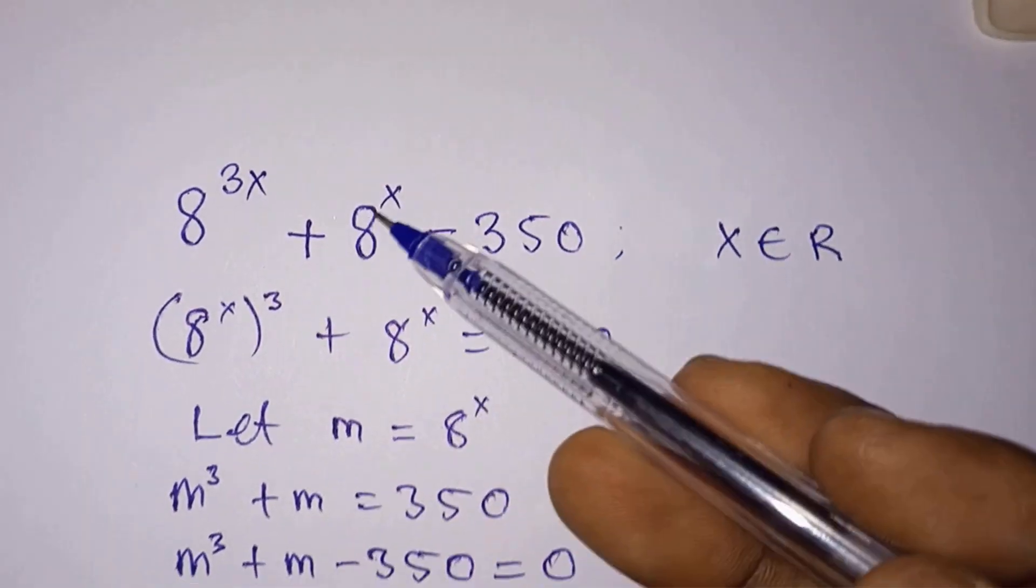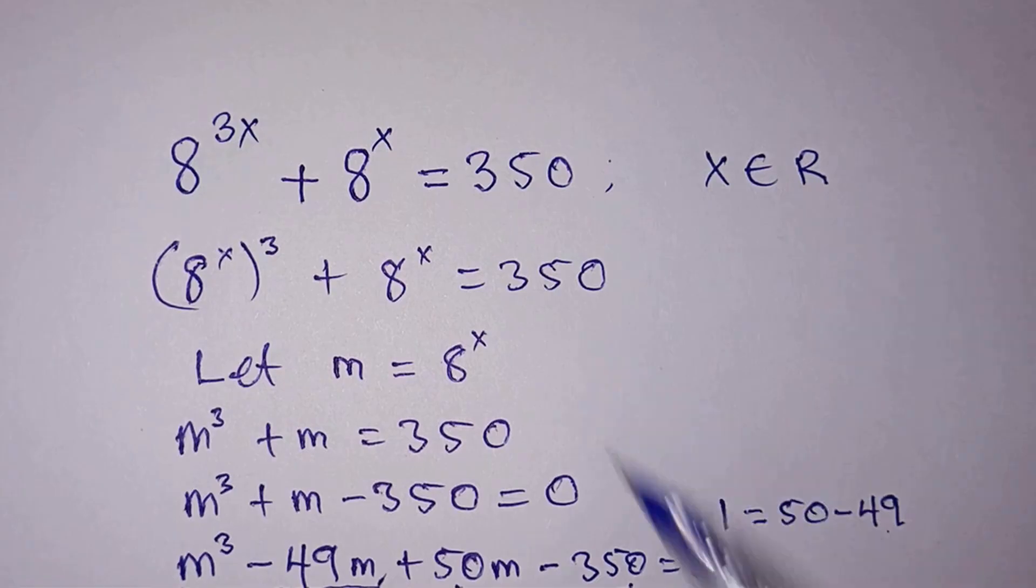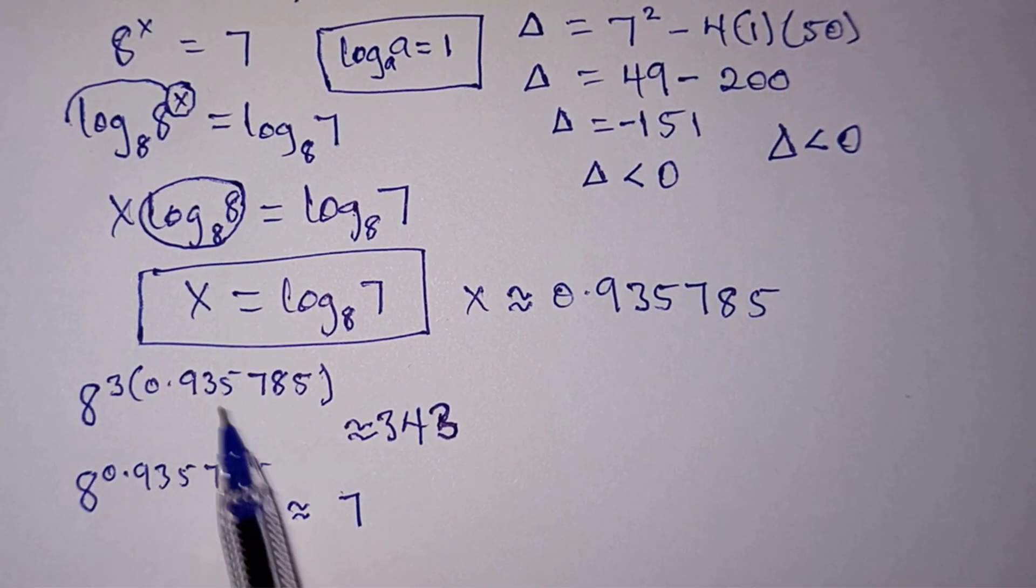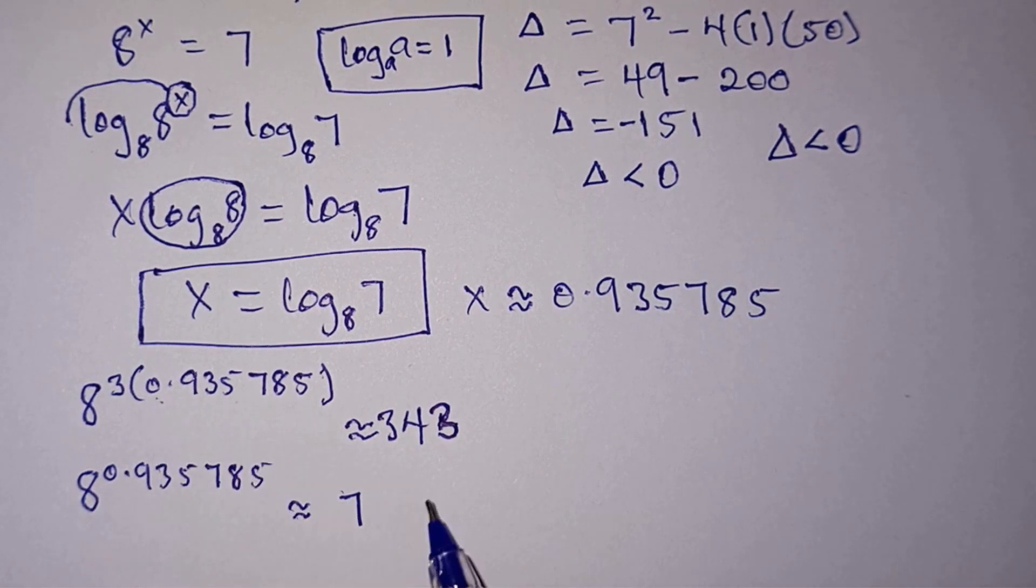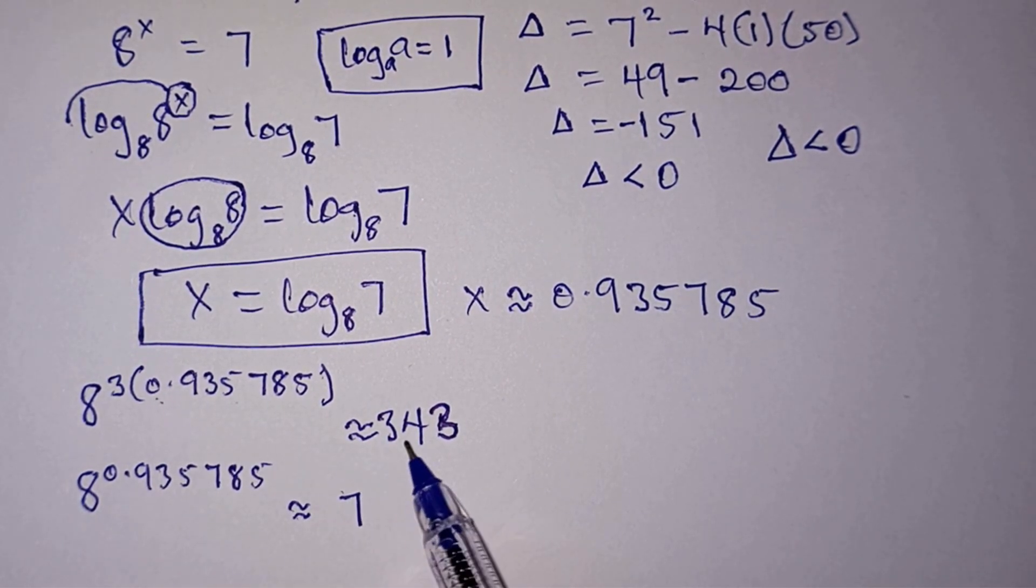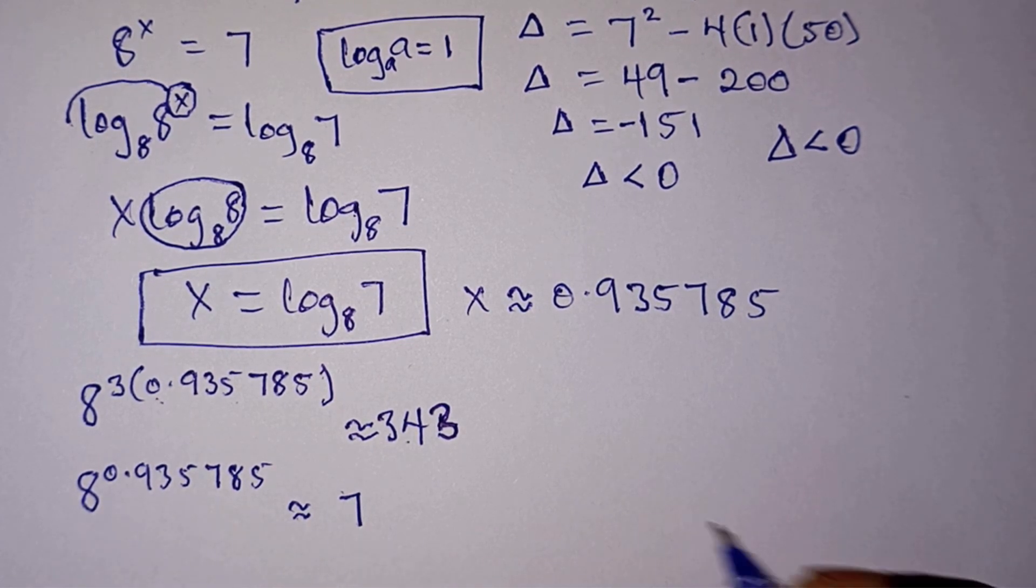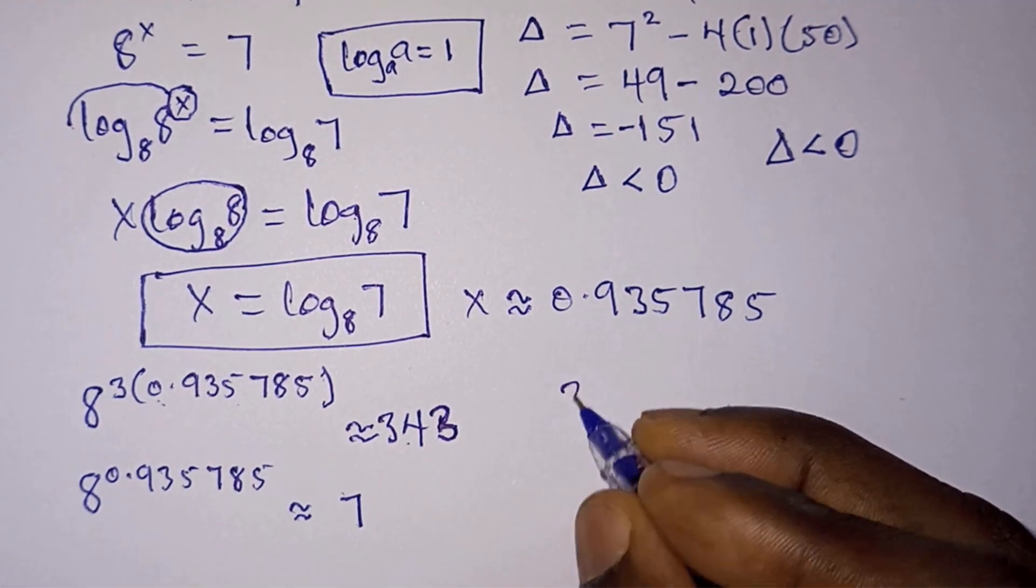So we're going to test whether our answer satisfies the equation. Now we have 8 to the power 3 times x, where x is this value we got, approximately 343. Then 8 to the power x is also approximately equal to 7. So let's go ahead and add these two values. We have 343 plus 7.